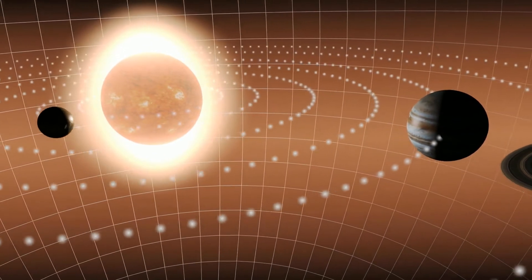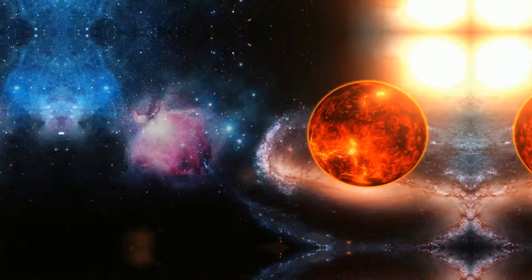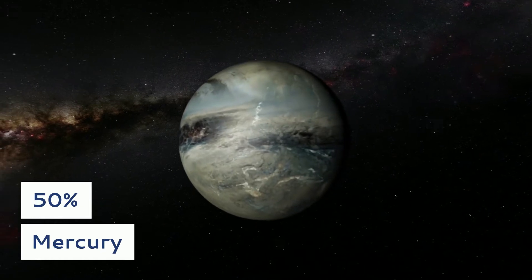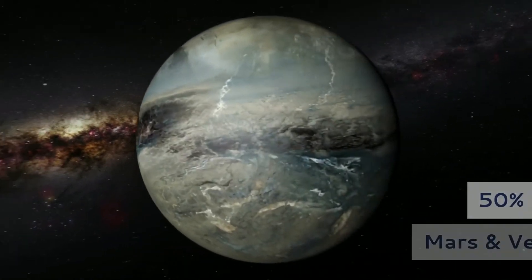Mercury's orbit doesn't take it very far from the Sun, but Venus gets much farther away from Earth during its orbit. Mercury is closer to Earth almost 50% of the time with the remainder split between Mars and Venus.